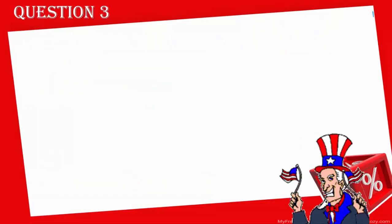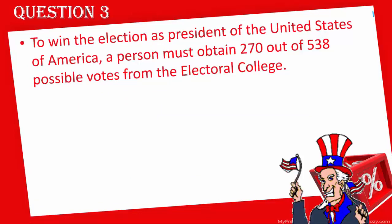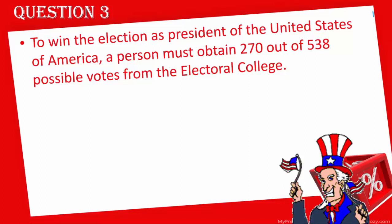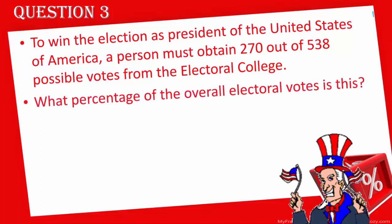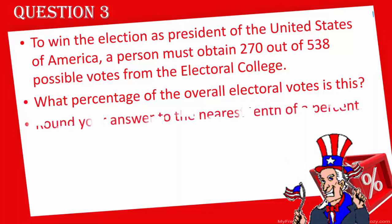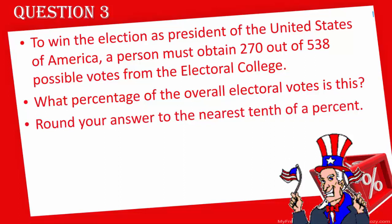In question three, it states: to win the election as President of the United States, a person must obtain 270 out of 538 possible votes from the Electoral College. What percentage of the overall electoral votes is this? Round your answer to the nearest tenth of a percent. We'll go work out the details on the whiteboard.